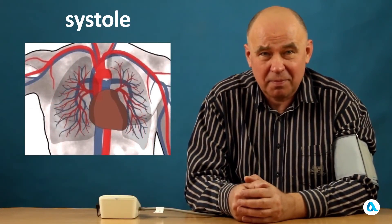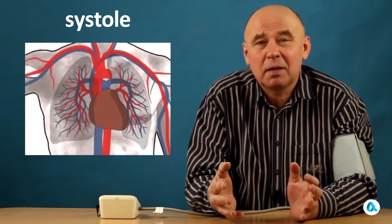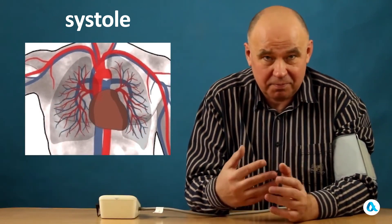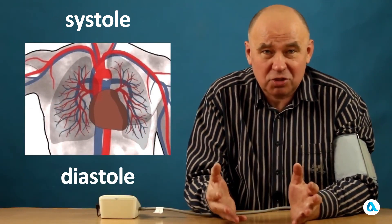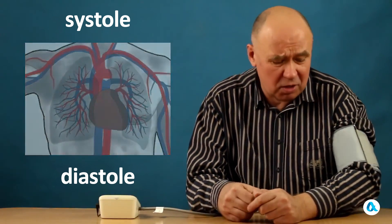Accordingly, there is a maximum pressure that the heart creates when it contracts, and this pressure is called systolic. And pressure remains in the system even when the heart is relaxed, and this pressure is called diastolic. These are the two pressures that we measure.